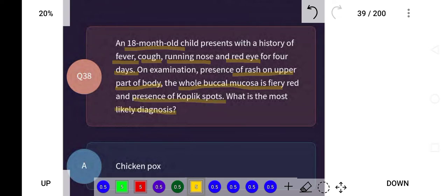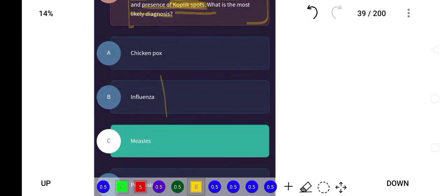So the mystery has been solved—Koplik spots are mentioned here. Now pause the screen and try to answer yourself. Okay, so the answer is Koplik spots means measles. An 18-month-old child—chicken pox? No, not chicken pox.